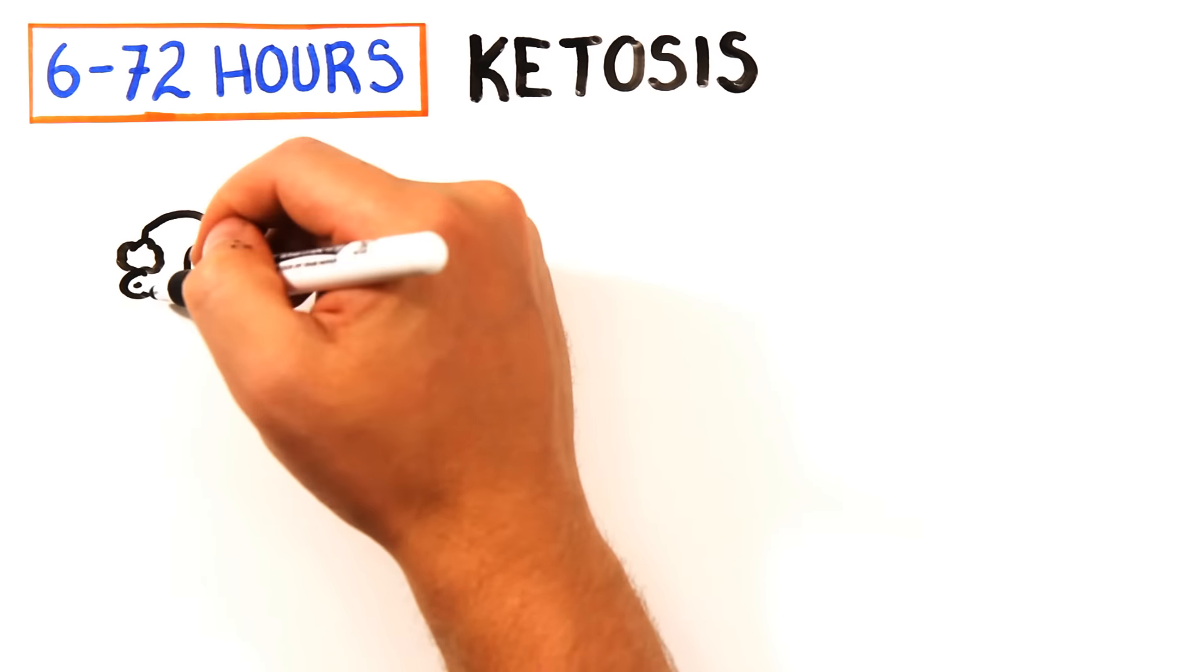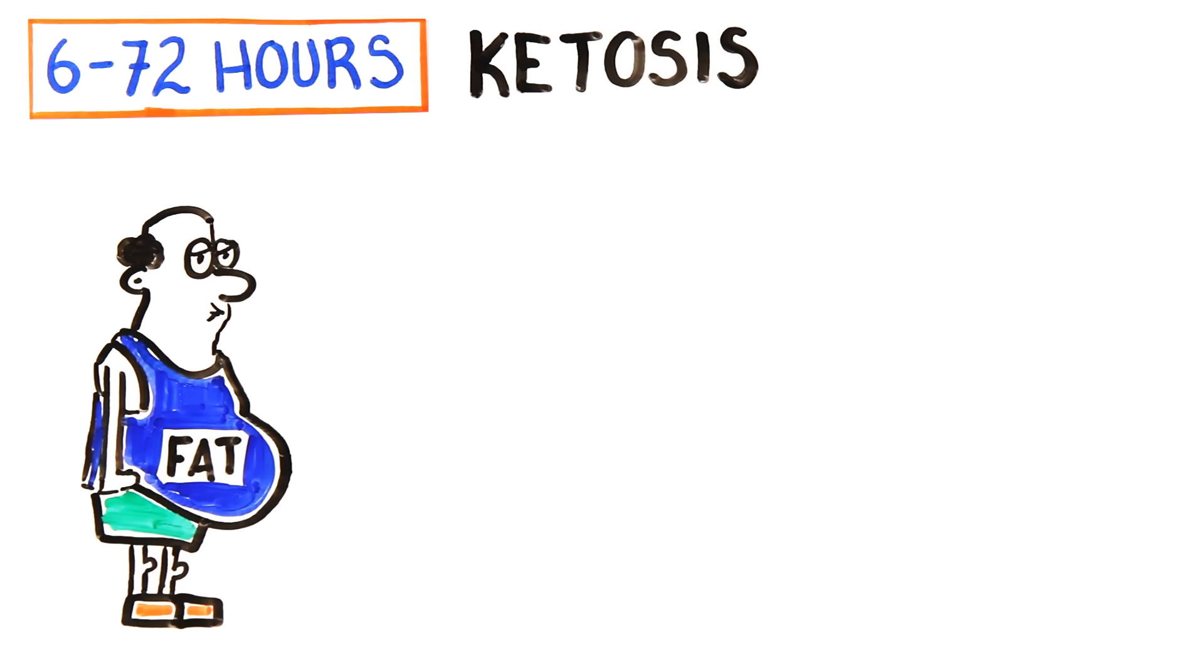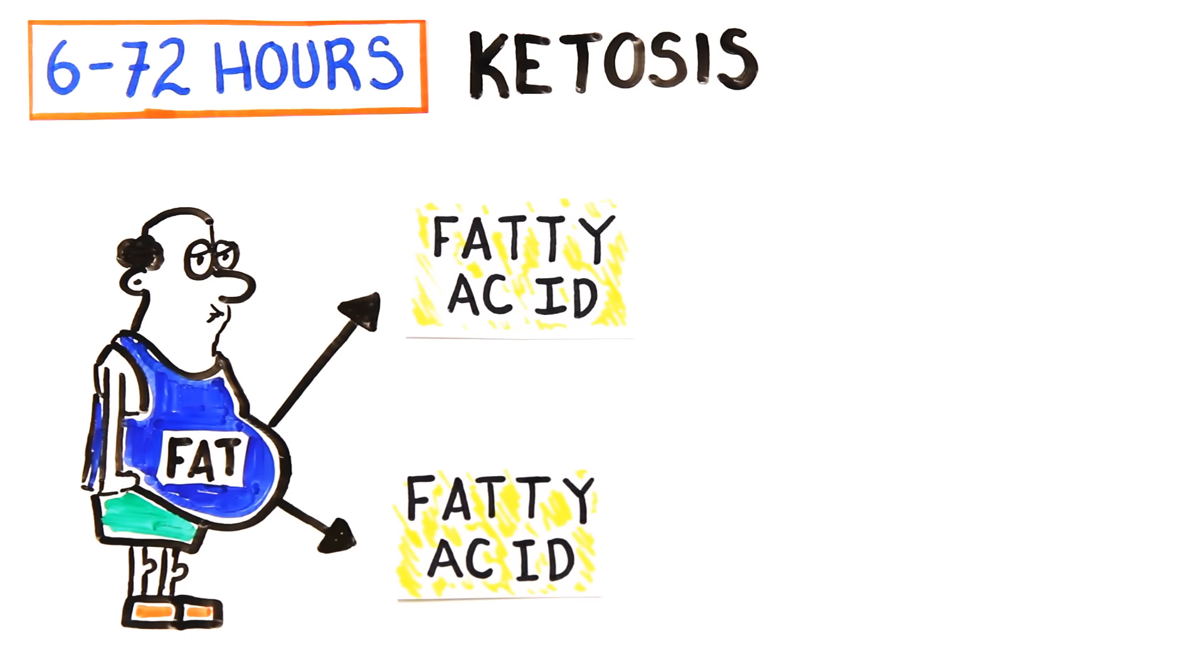At this point, your body enters a state called ketosis as it begins to fast or starve. Because there's very little glucose in your blood, your body must begin to break down fat for energy. This fat is in turn broken down into fatty acids.